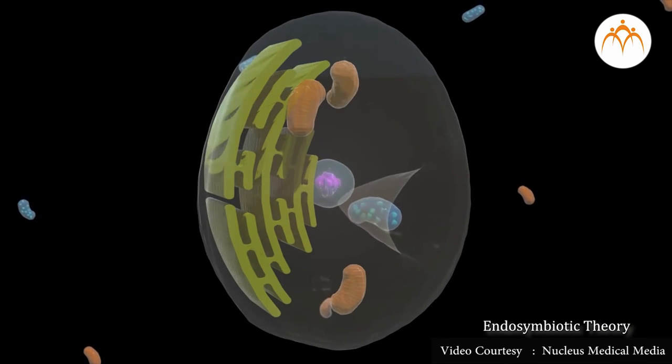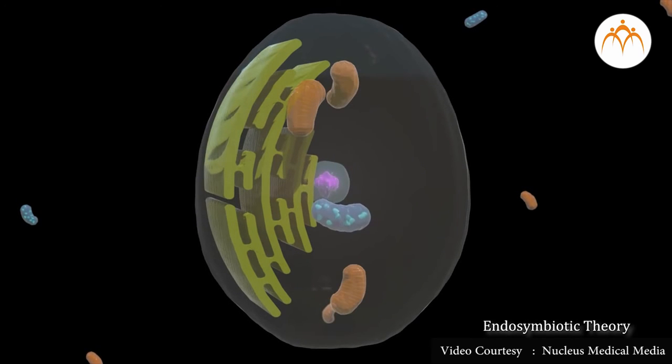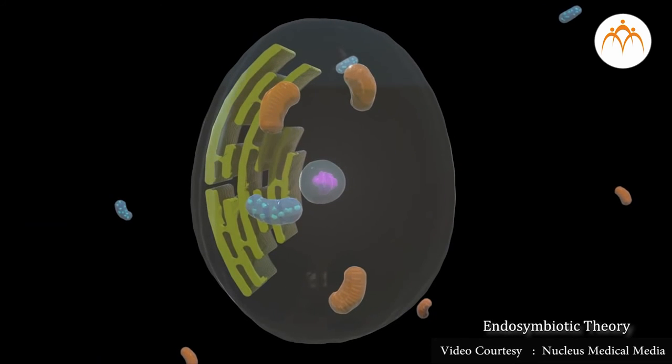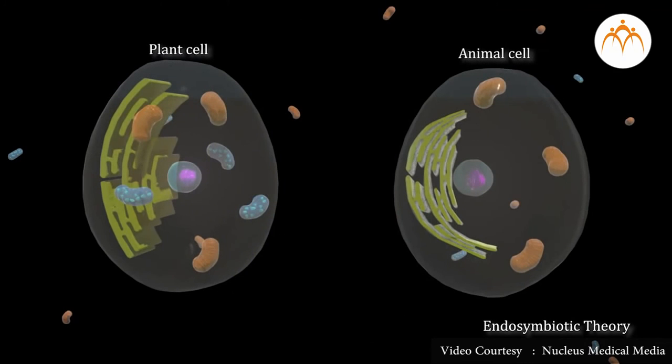Evidence for this is based on the following: Chloroplasts and mitochondria are the same size as prokaryotic cells and divide by binary fission like bacteria. Mitochondria and chloroplasts have their own DNA that is circular like prokaryotes. Mitochondria and chloroplasts have their own ribosomes which are of 70S type like in prokaryotes. No experimental evidence but only circumstantial evidence is available in support of the proposal.